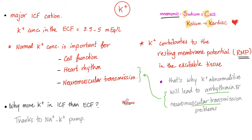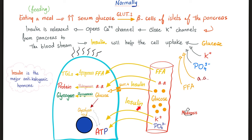Remember the story of insulin? Insulin pushes 5 things into the cell: glucose, amino acids, free fatty acids, potassium, and phosphate. This is very important. If I lack insulin, potassium will not enter the cell — it stays outside, causing hyperkalemia. Conversely, if there's too much insulin — maybe because of an insulinoma — all of that potassium gets pushed inside the cell, leaving less potassium in the blood, i.e., hypokalemia.